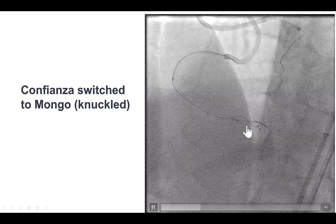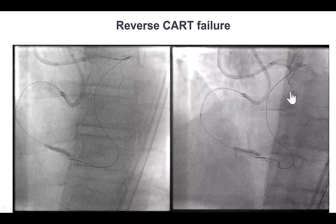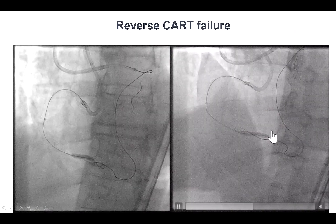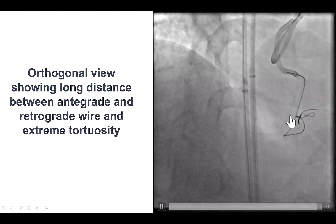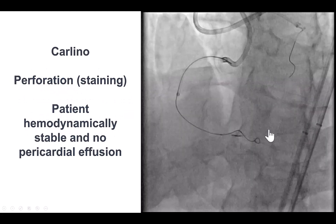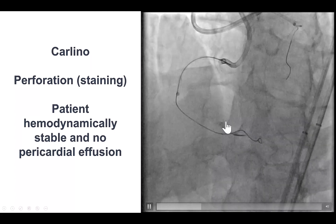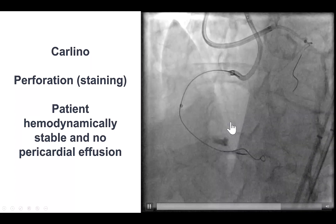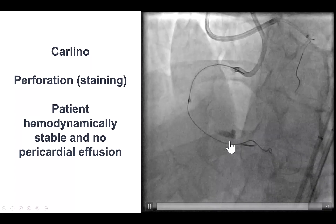We switched to a Gladius Mongo to minimize the risk of perforation, but had difficulty making the connection despite advancing an antegrade balloon. We did an orthogonal projection that helped us understand the problem — the retrograde wire kept going in a different location than the antegrade wire. We decided to use the Carlino technique, and had a little bit of wire exit with slight staining, but that staining was stable and not clearing, giving us reassurance that we did not have any significant perforation.